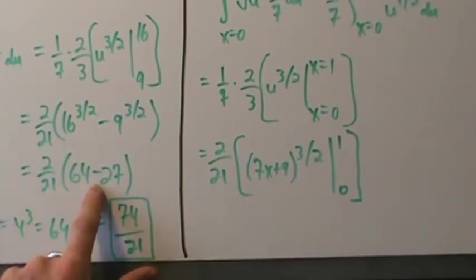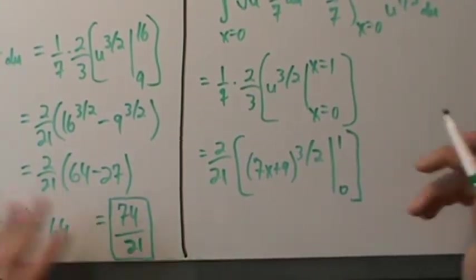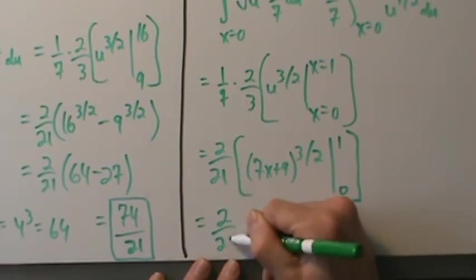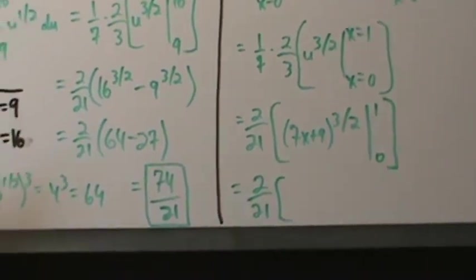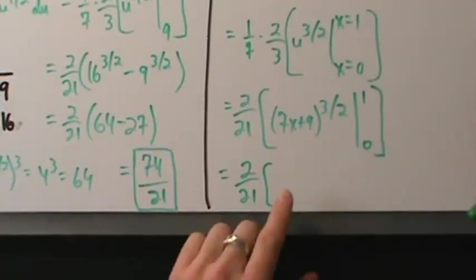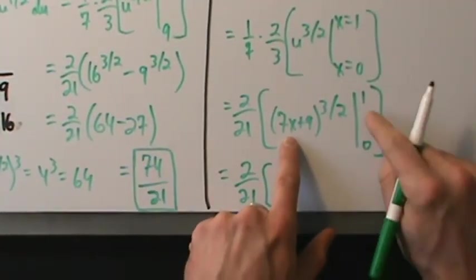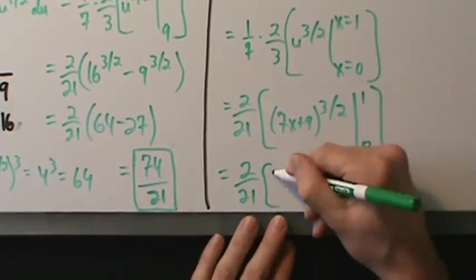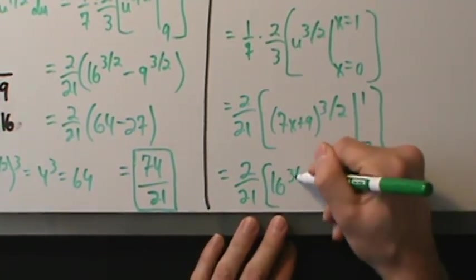So we have (2/21) times [16^(3/2) − 9^(3/2)]. At x = 1: 7(1) + 9 = 16, 16^(3/2) = 64. At x = 0: 7(0) + 9 = 9, 9^(3/2) = 27.